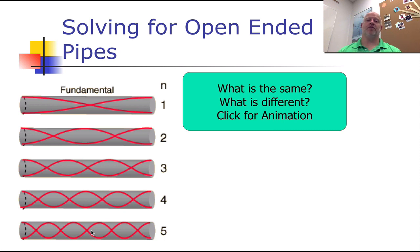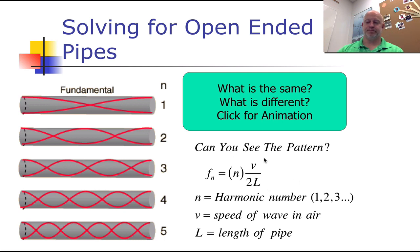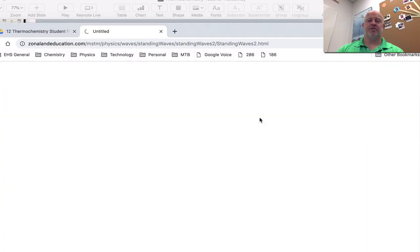Looking at our pattern, it's identical to a string — so if you can do the math for a string, you can do the exact same math for an open-ended pipe. The equation stays the same. The only difference is that at the ends we have anti-nodes and the node is in the middle, whereas with strings we had nodes on the ends.